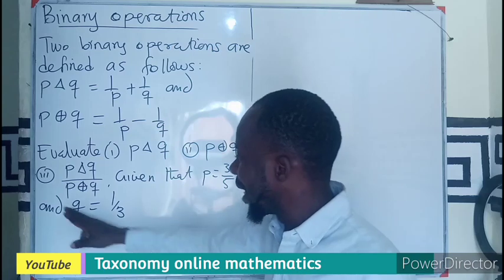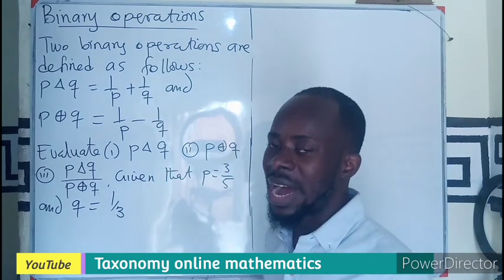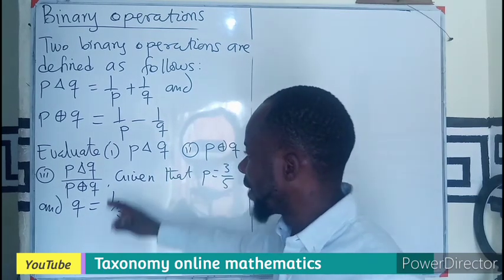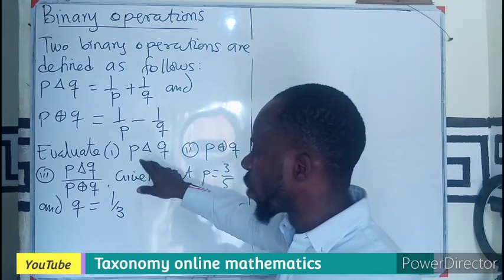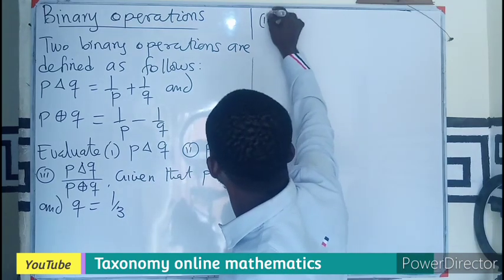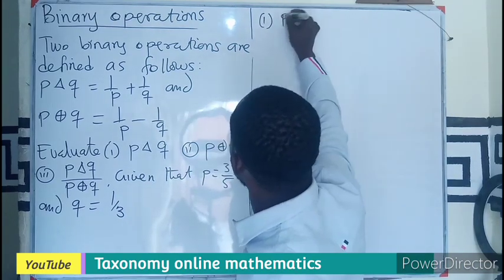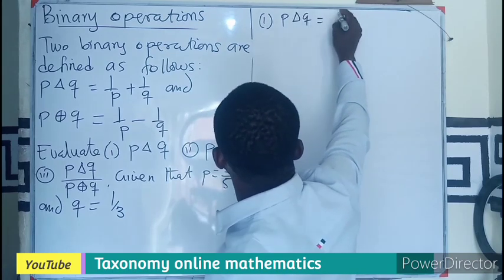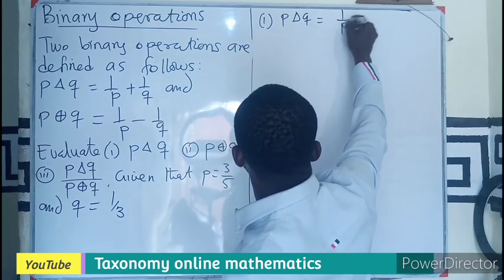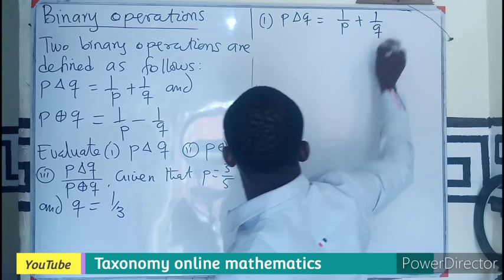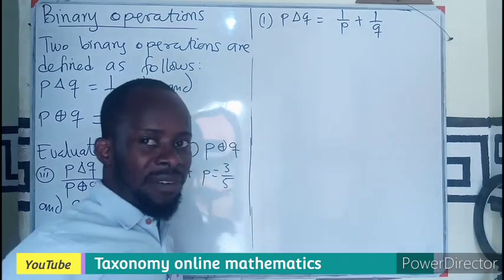Right away, beginning with the first one, we are going to have P triangle Q will be 1 over P plus 1 over Q. By replacing the value of P with 3 over 5, then that of Q, 1 over 3.